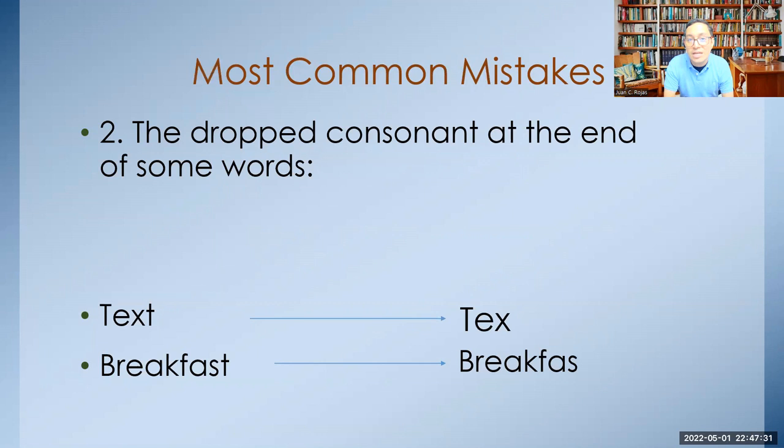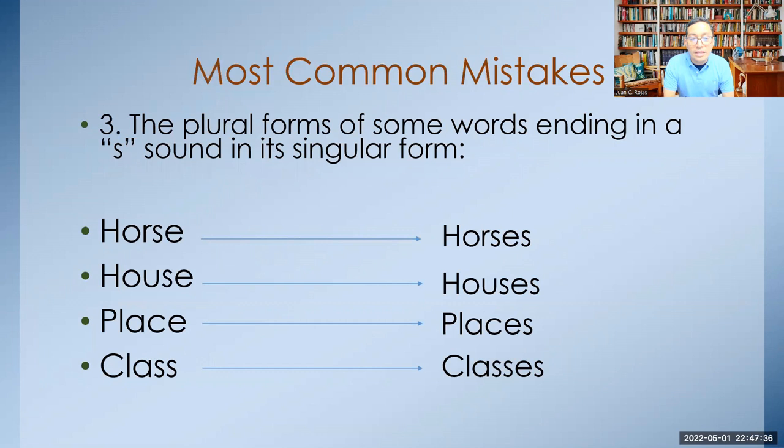The third common mistake is the plural of some words ending in an S sound, which makes us believe it is already in plural form. For example: 'horse', 'house', 'place', 'class'. When we say 'class', we already believe we're making it sound plural. But the right way is: 'horse' becomes 'horses', 'house' becomes 'houses', 'place' becomes 'places', 'class' becomes 'classes'.